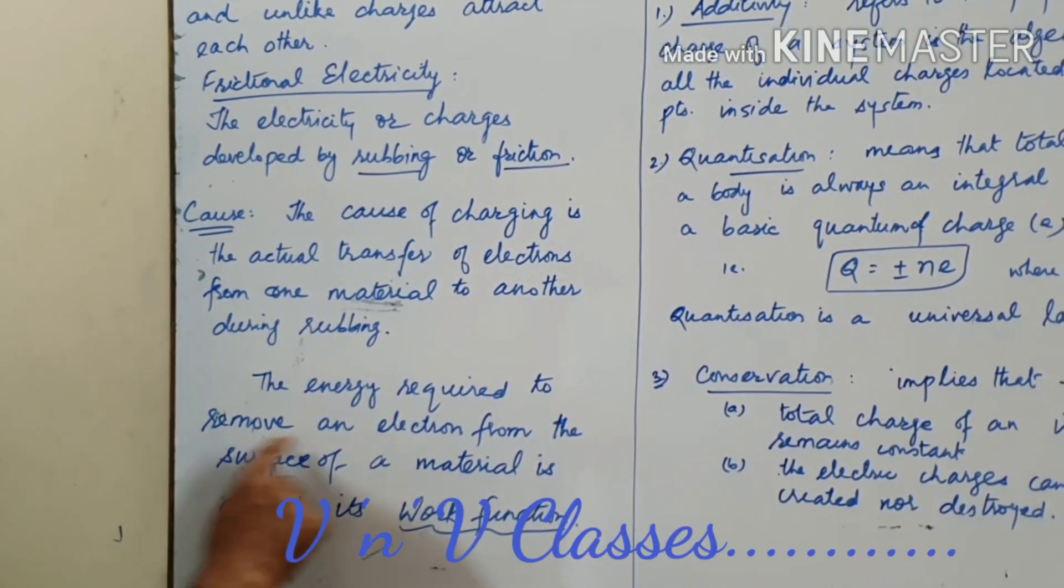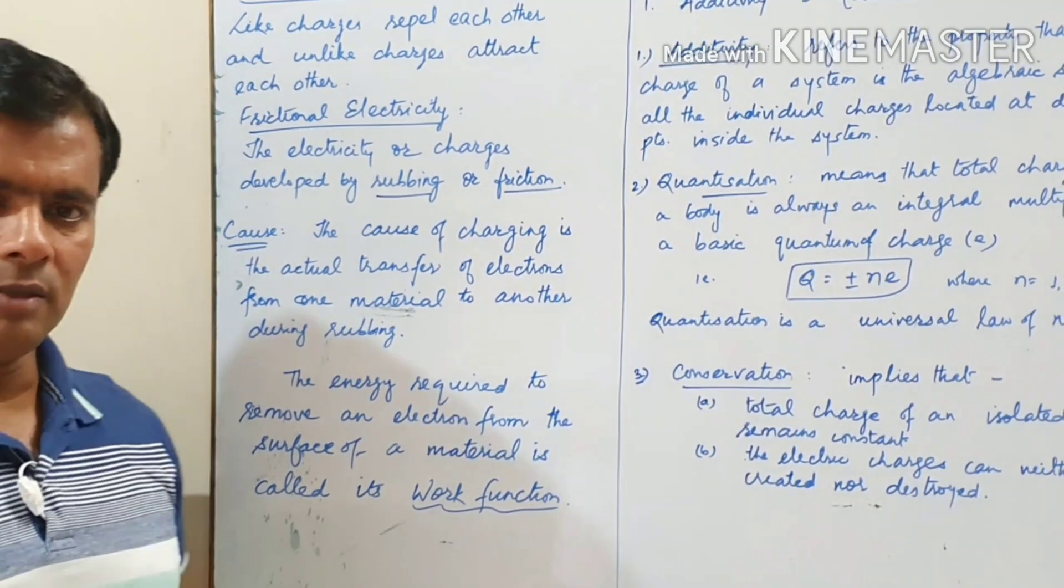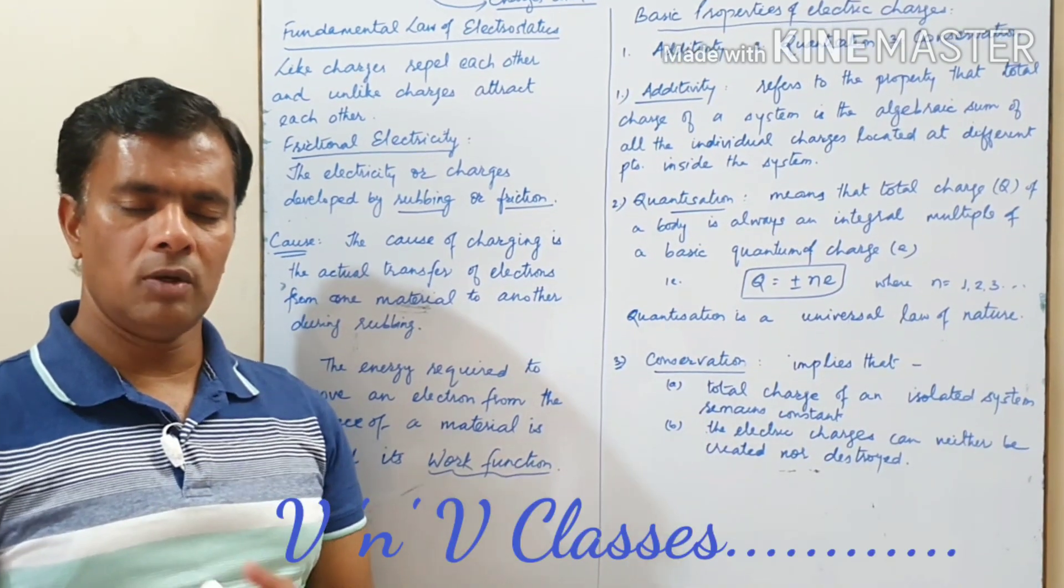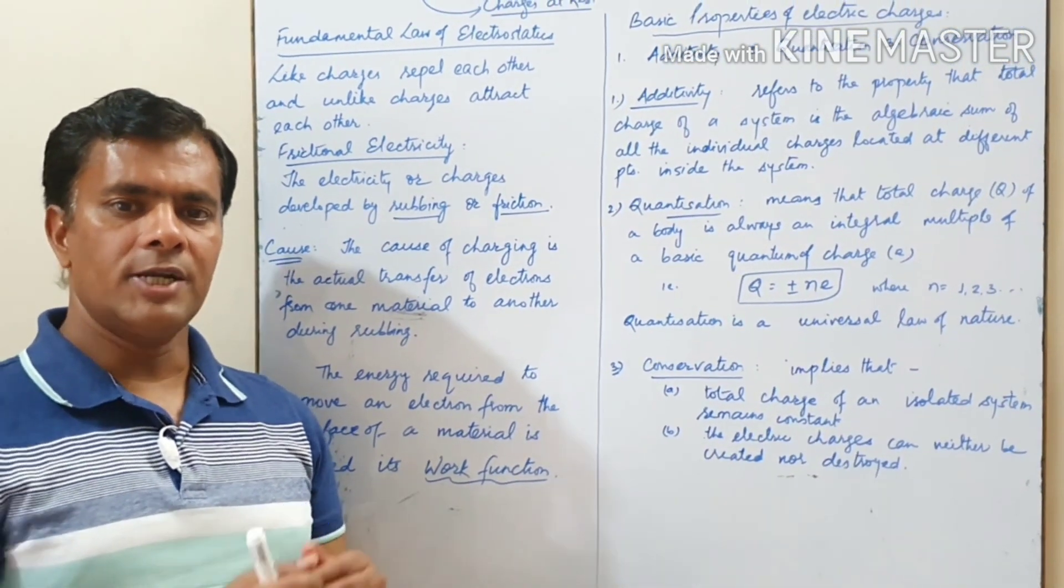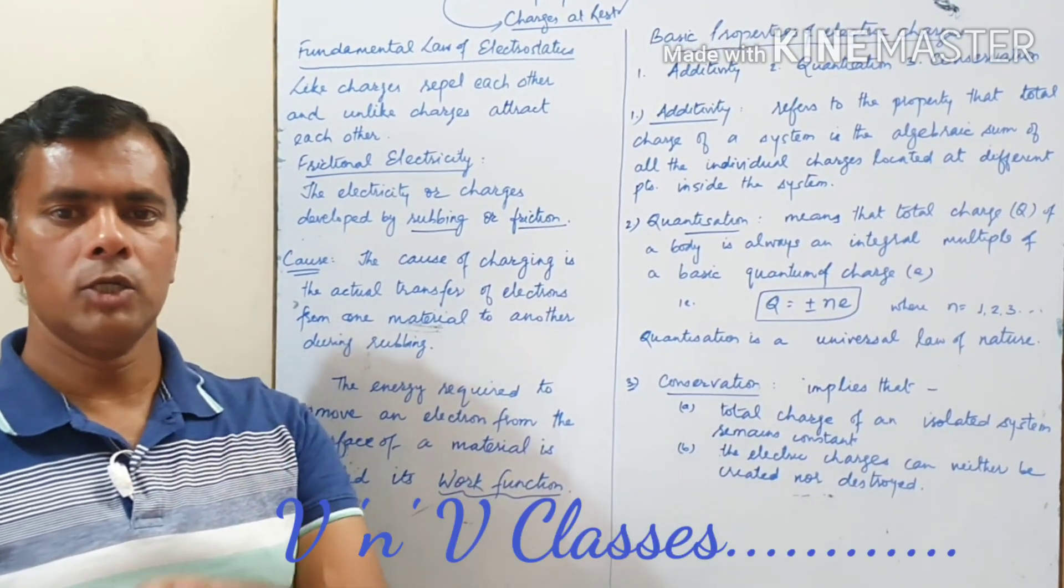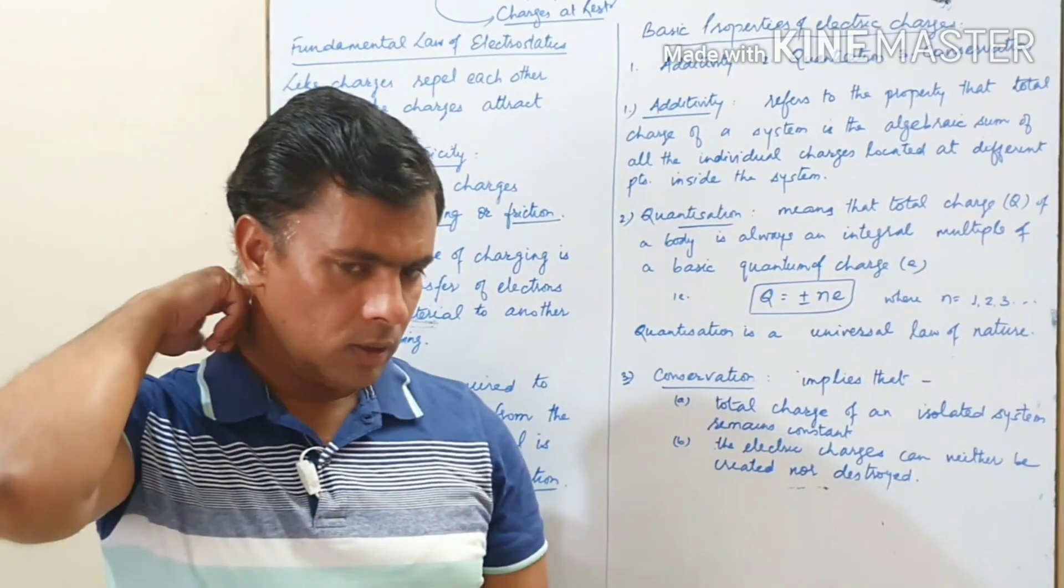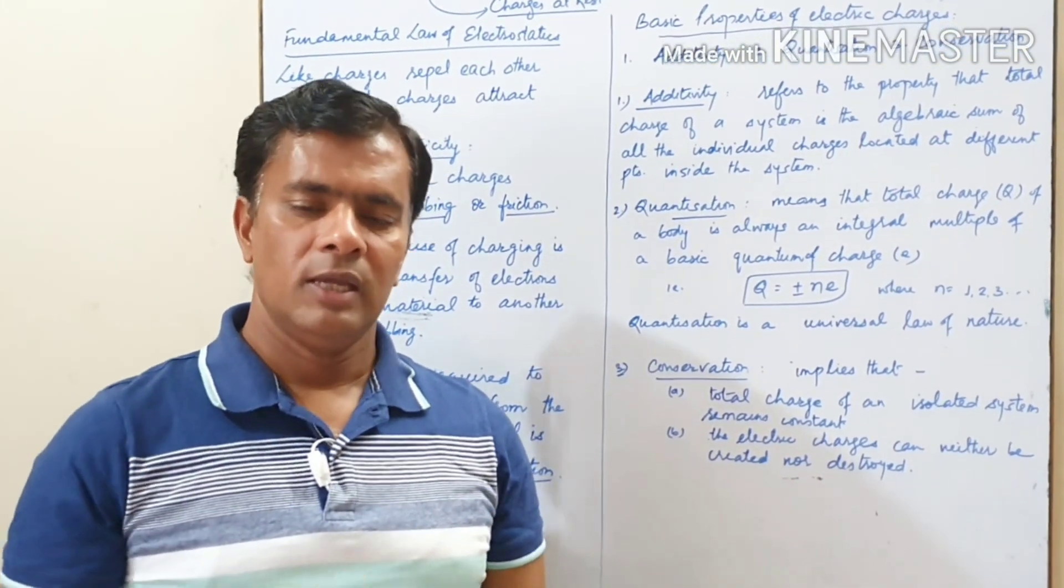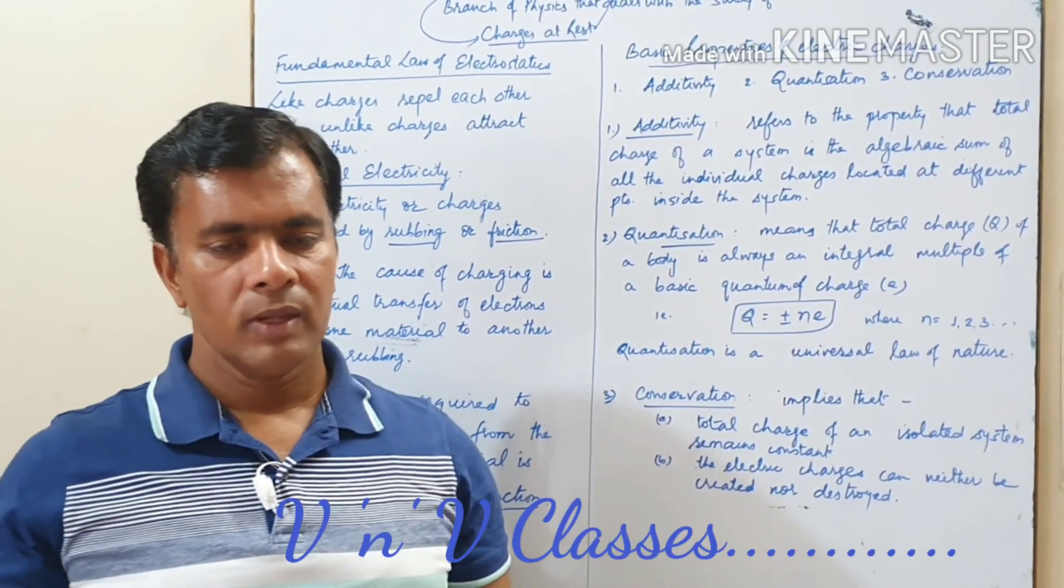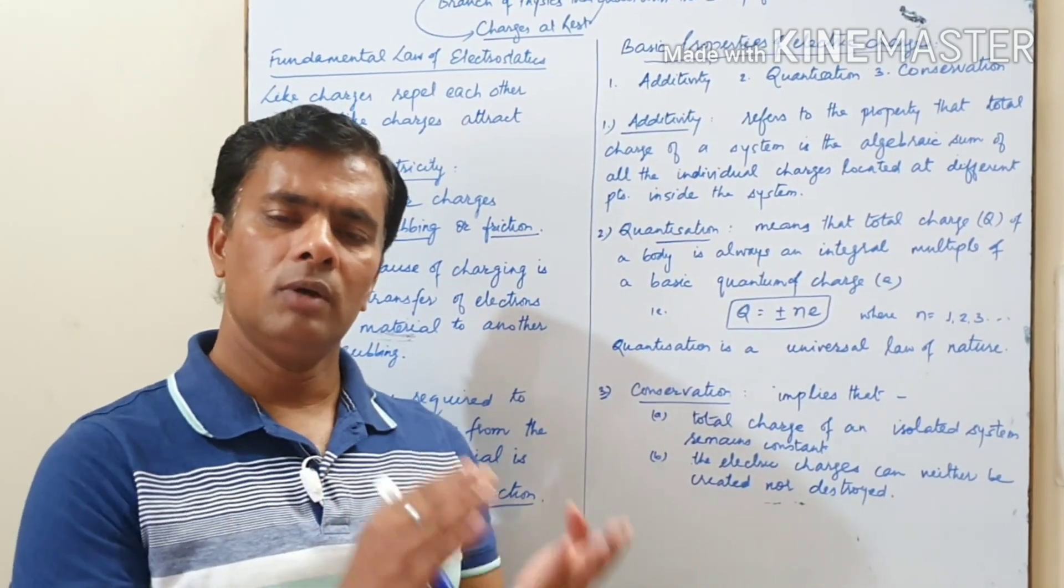The energy which is required to remove an electron from a metal surface is termed as the work function. So energy required to remove an electron from the surface of a material is called its work function. So as soon as the charge or the electron acquires this energy, it shifts itself from body A to body B. It is depending upon the work function of the bodies. If body A has got lesser work function, so charge will move from A to B and if the body B has got the lesser work function, it will go from B to A.